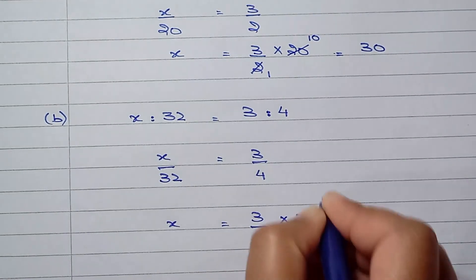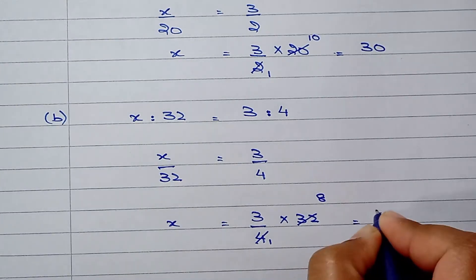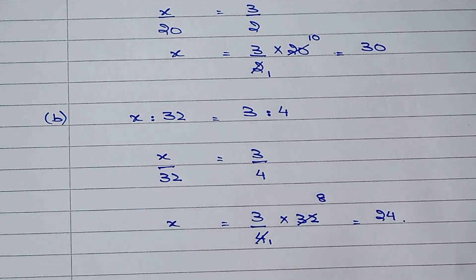And 4 times 1 is 4, 4 times 8 is 32, and 3 times 8 is 24. So we can say that the decrease 32 in the ratio is 24.